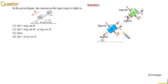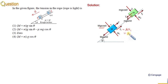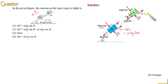Now we can write the values of F1 and F2. F1 is μ multiplied by N1, and N1 is equal to Mg cosθ, so F1 is μMg cosθ. Similarly, F2 is equal to μ multiplied by N2, and N2 is equal to mg cosθ, so F2 is μmg cosθ.